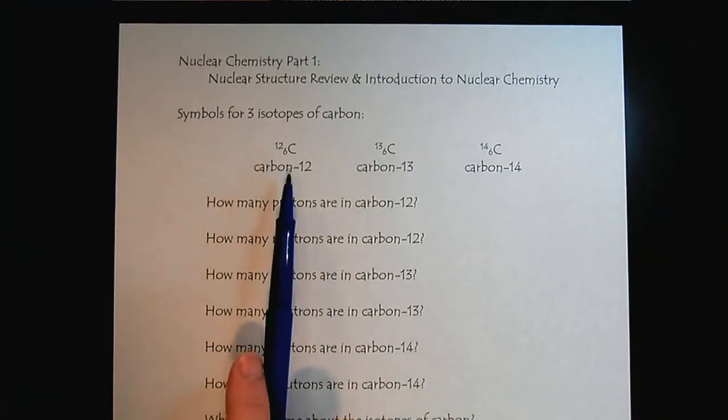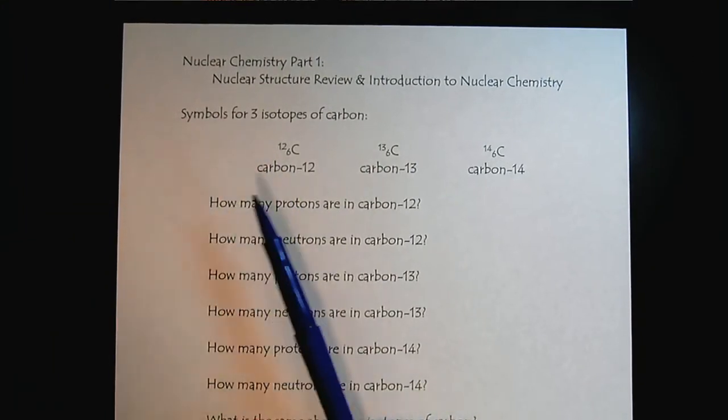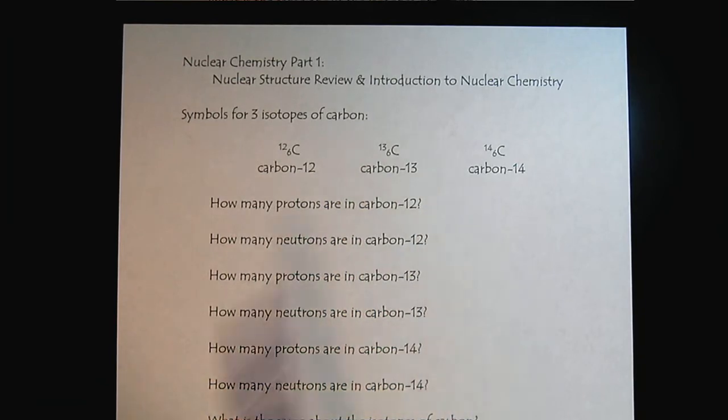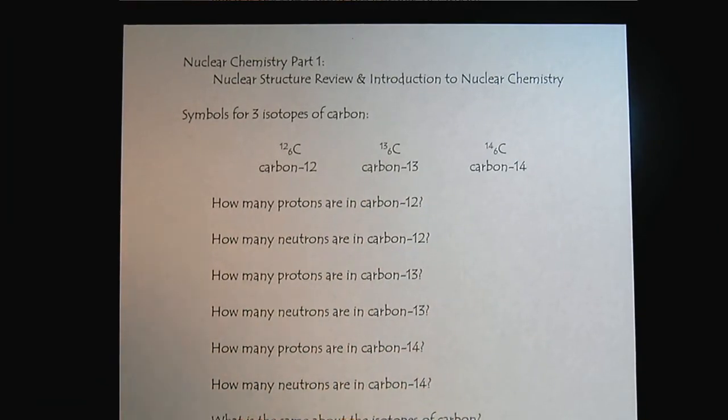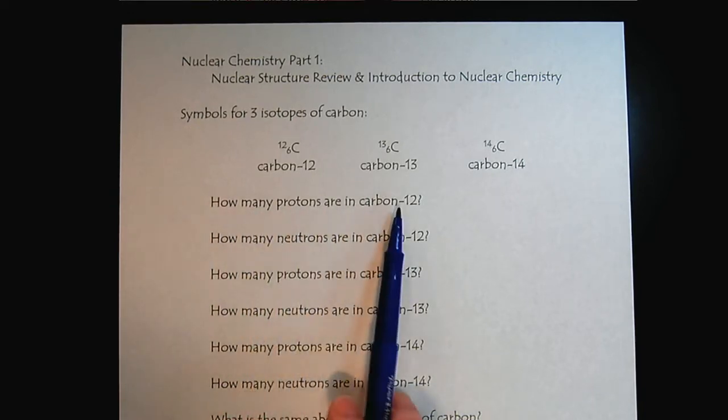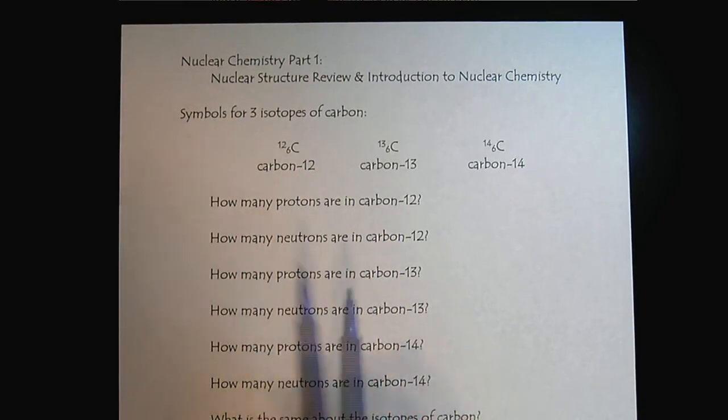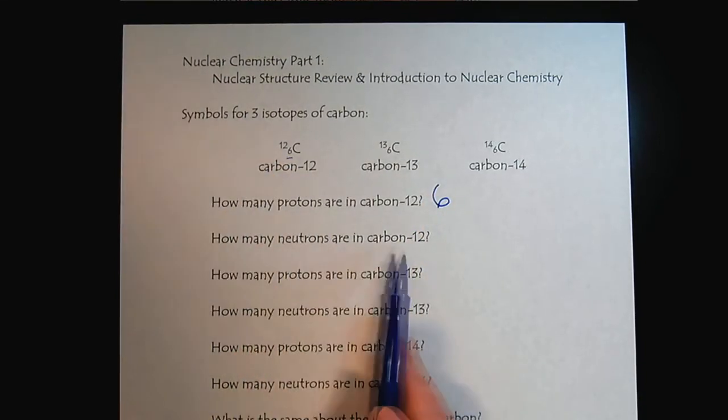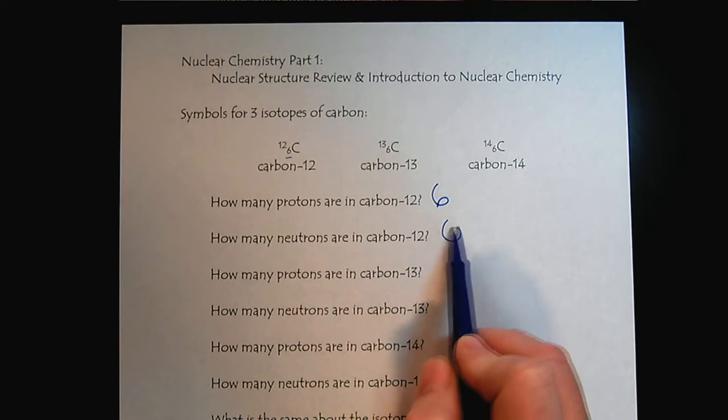Here we have three symbols for various isotopes of carbon. So this is a quick review. This would be a great place to just pause and answer all the questions and check in to see where you are with your knowledge of nuclear structure. As we look at carbon-12, we would see that it has six protons and it would have six neutrons.